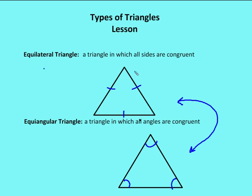An equilateral triangle is a triangle in which all sides are congruent — you can see all sides marked with one tick mark. An equiangular triangle is a triangle in which all angles are congruent. If I have an equilateral triangle, I also have an equiangular triangle, and vice versa. So all equiangular triangles are equilateral triangles, and all equilateral triangles are also equiangular triangles.